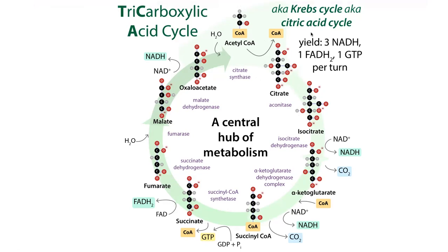When we perform the citrate synthase step and release the CoA, this is going to have a nicely negative delta G — energetically favorable — and we're also going to want to regulate it tightly. When we join acetyl-CoA and oxaloacetate together, we get our citrate, our six-carbon molecule.